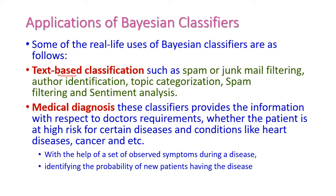Let us see text-based classification. Some of the problems that can be solved under this classification are spam or junk mail filtering, author identification, topic categorization, spam filtering, and sentiment analysis. These are problems that can be solved under text-based classification using the Bayesian classifier.